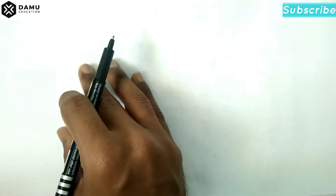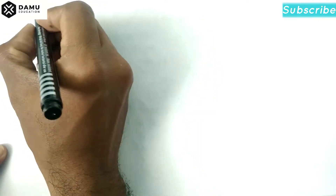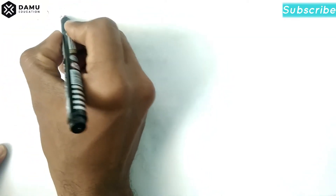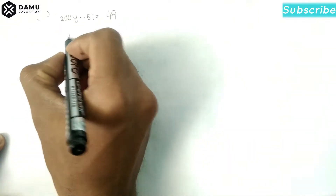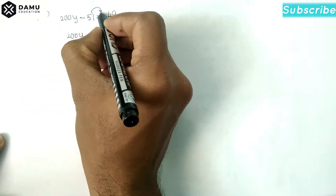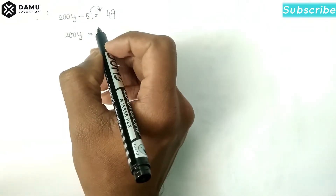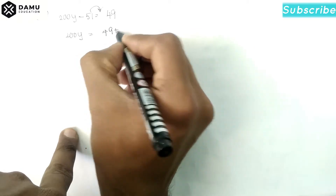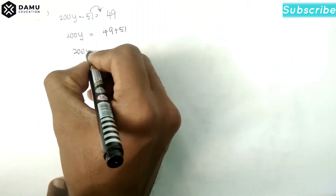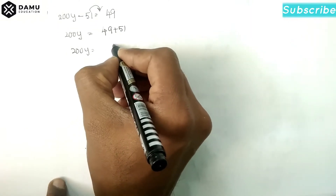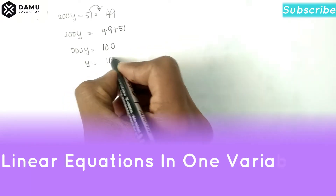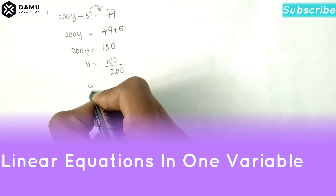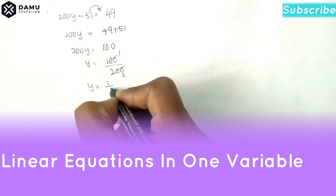Hello viewers, in this session we are going to discuss exercise 1 solutions. The eleventh one: 200y - 51 = 49. Keep 200y as it is, shift -51 to the right side to get +51, so 200y = 49 + 51 = 100. Then y = 100/200 = 1/2.